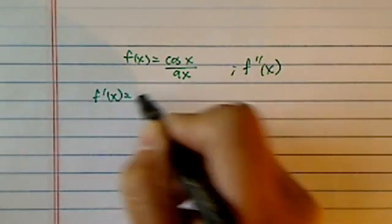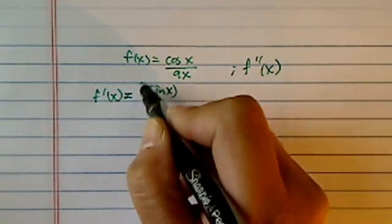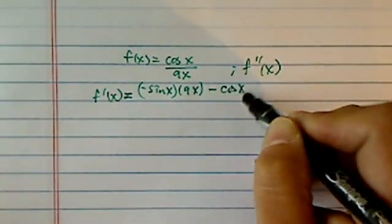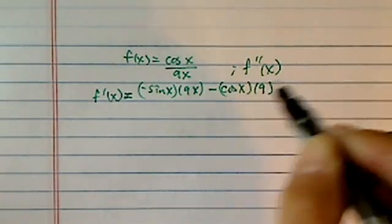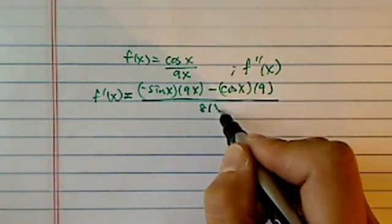First derivative, it's going to take the derivative of the top, which is minus sine x, leave the bottom alone, minus cosine of x, and 9, take the derivative of the second one on the bottom, and you have 81x squared.